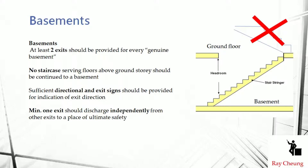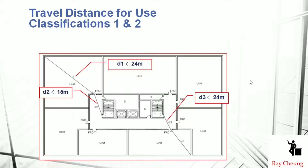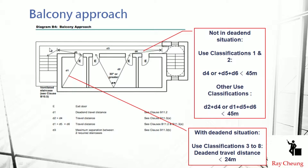There are also maximum travel distance requirements for Class 1, Class 2, and other use classes. The balcony approach — normally used for schools — is another specified requirement under the code.